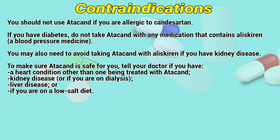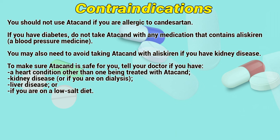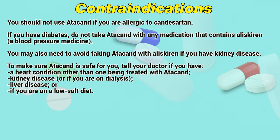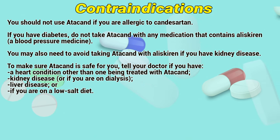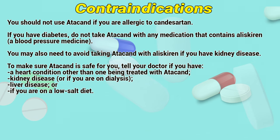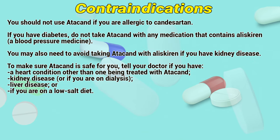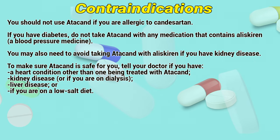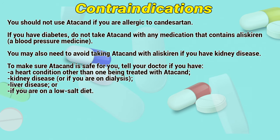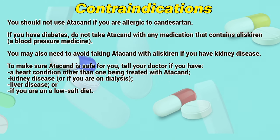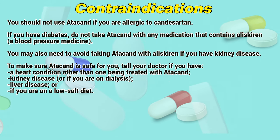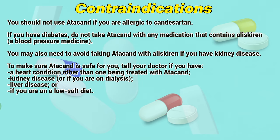Contraindications: You should not use Atacand if you are allergic to candesartan. If you have diabetes, don't take Atacand with any medications that contain aliskiren or other blood pressure medicines. You may also need to avoid taking Atacand with aliskiren if you have kidney disease. Tell your doctor if you have a heart condition other than the one being treated, kidney disease, or if you are on dialysis, liver disease, or if you are on a low-sodium diet.